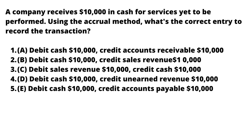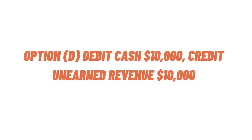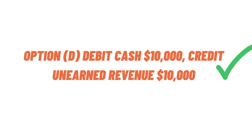The options are: debit cash $10,000 credit receivables; debit cash $10,000 credit sales revenue $10,000; debit sales revenue credit cash; debit cash credit earned revenue; and all of them.